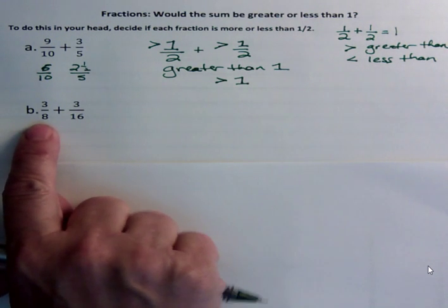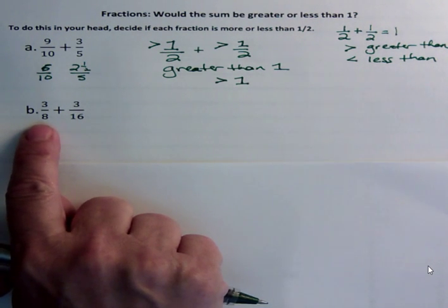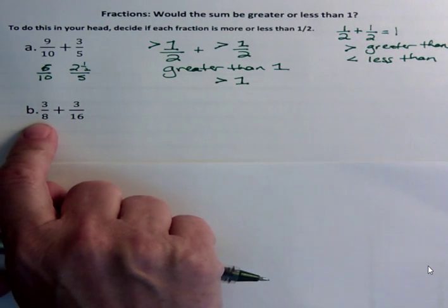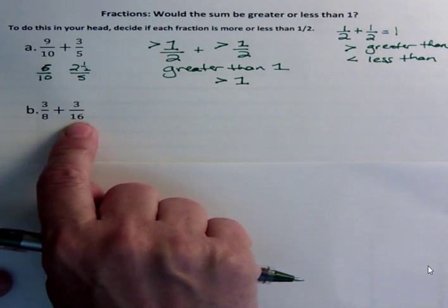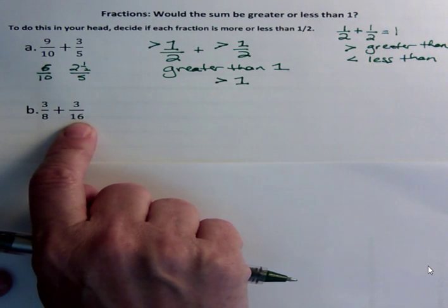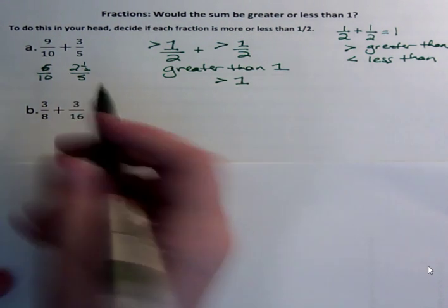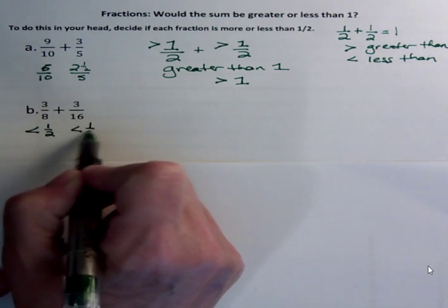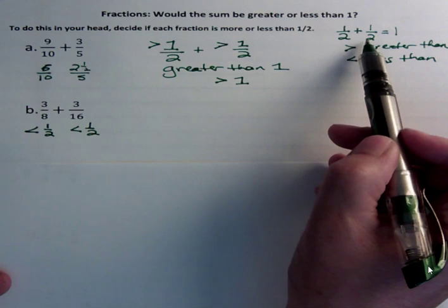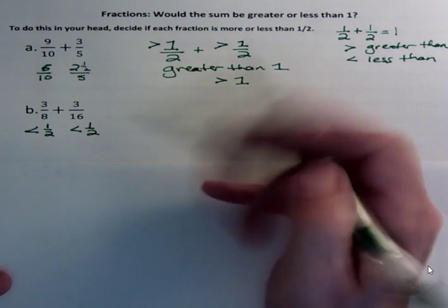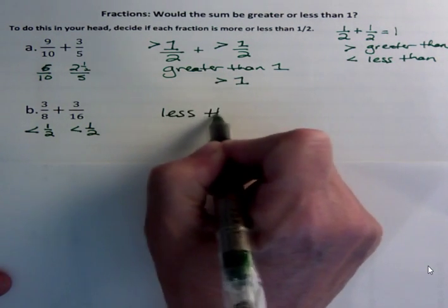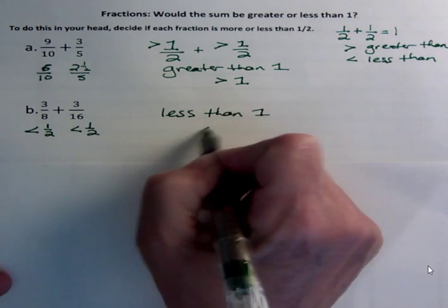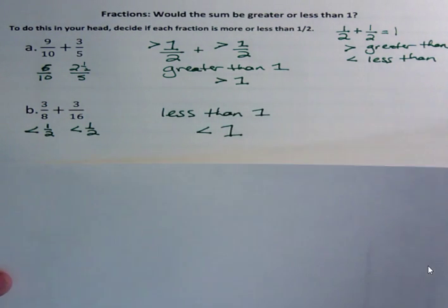What about three-eighths? Is that less than a half or greater than a half? Well, three-eighths, four-eighths would be half, so this is less than. And what about three-sixteenths? Half of sixteen would be eight-sixteenths, so this is also less. So this is less than one-half, and this is less than one-half. If I have less than one-half for both of my parts, I'm not going to get to one. That means that my answer is less than one.